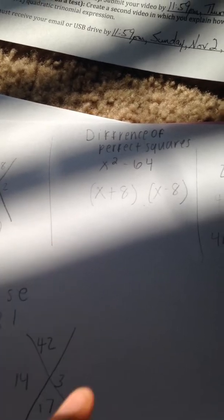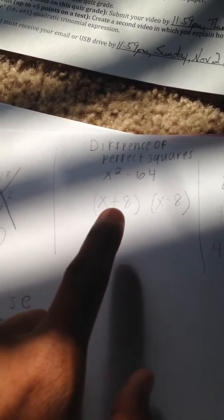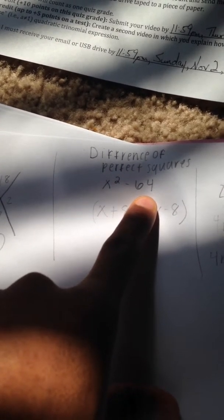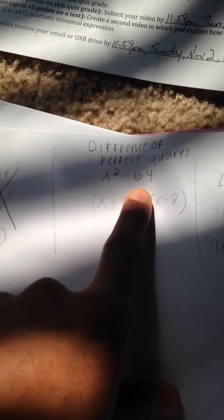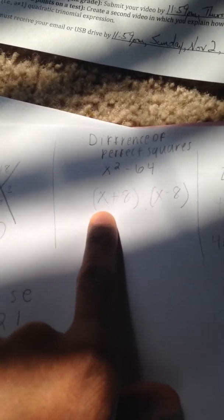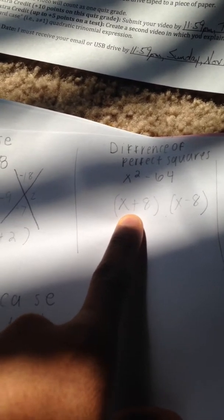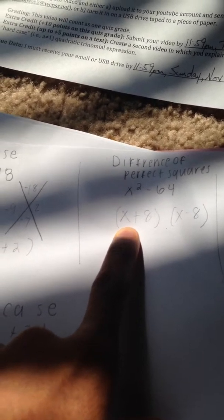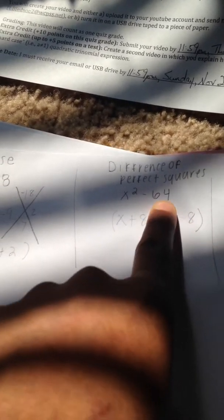Moving along — this is my difference of perfect squares. Both terms are perfect squares, so I can factor a perfect square out of both of them. X squared is a perfect square, which we can factor as x times x, and negative 64 is a perfect square, which we can factor out an 8. My solution is x plus 8 and x minus 8, which when multiplied gives me x squared minus 64.